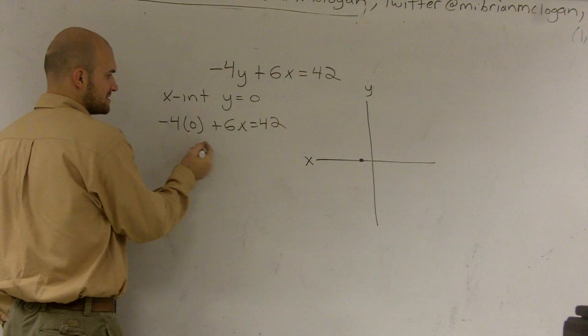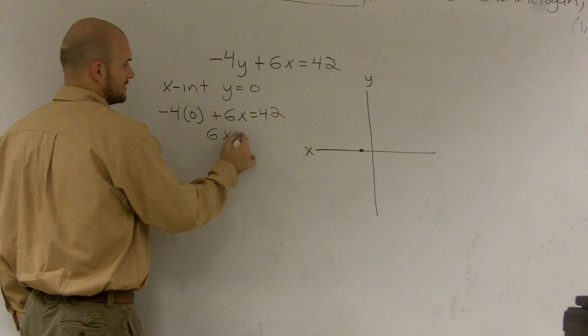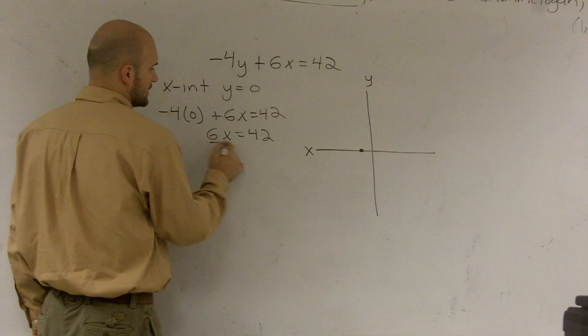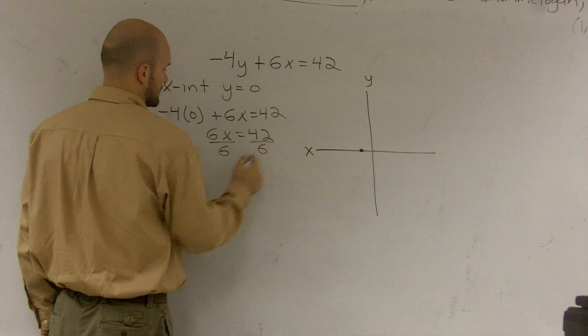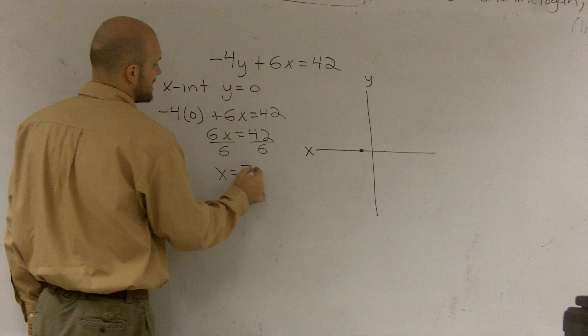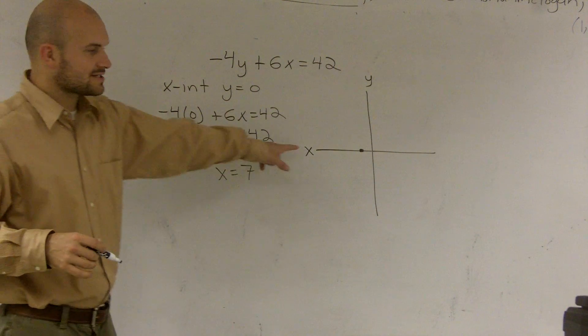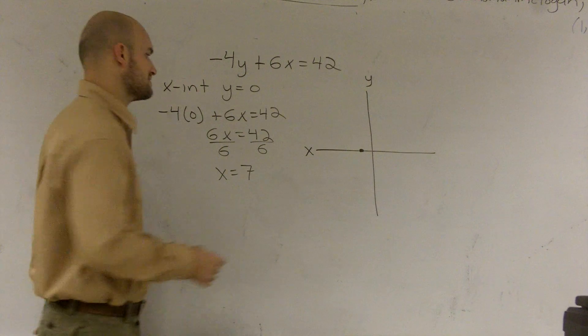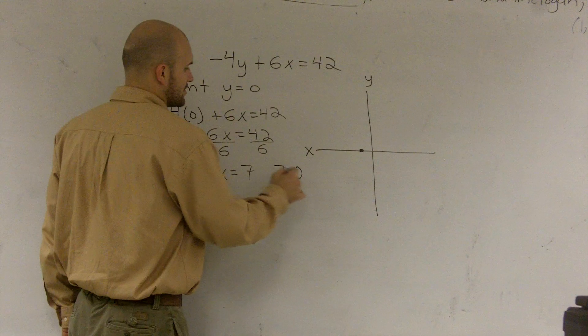Then, obviously this becomes 0, so I get 6x equals 42, divide by 6, x equals 7. Therefore, my x-intercept is when x is the value of 7, or 7 comma 0.